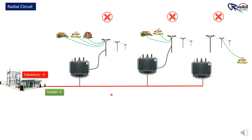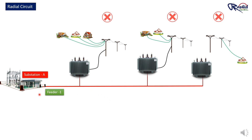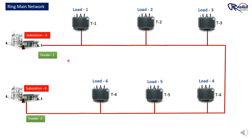Meanwhile, the electrical team must find the fault and repair it as soon as possible. Only then can the breaker be turned on, restoring power to all transformers. To solve the problems of the radial network, there is another type of network called ring main network or loop network.